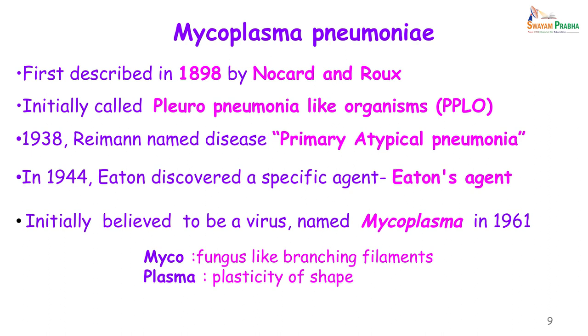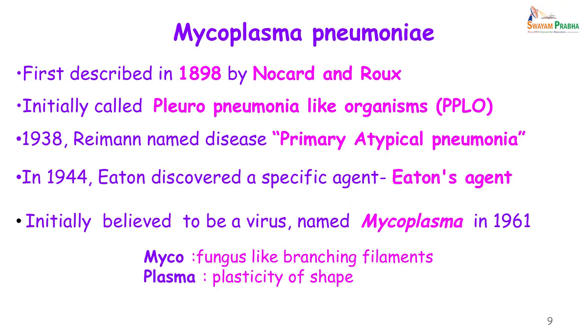Mycoplasma pneumoniae were first described in 1898 by Naukard and Roux. Initially they were named pleuro-pneumonia like organisms, PPLO. In 1938, Ryman named the disease primary atypical pneumonia because it would not respond to penicillin. In 1944, Eaton grew the organisms in chick embryo and therefore this organism was called Eaton's agent. Initially it was believed to be a virus, but in 1961 it was named Mycoplasma — myco to indicate that it has fungus-like branching filaments, and plasma because of the plasticity of the shape.